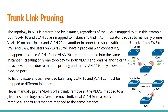To fix this issue and achieve load balancing, VLAN 10 and VLAN 20 must be mapped to different instances. Never manually prune VLANs of a trunk — remove all the VLANs mapped to the given instance together. Never remove individual VLANs from a trunk without removing all the VLANs that are mapped to the same instance.